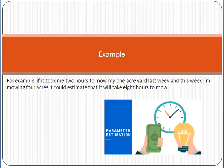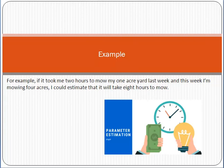Similarly, for example, last year it took you 1 hour to develop 1 database. So now, if there are 4 databases, you can complete them in 4 hours. This is the concept of parametric estimation, in which we do estimations in terms of time and cost, based on some parameters, based on some unit cost.